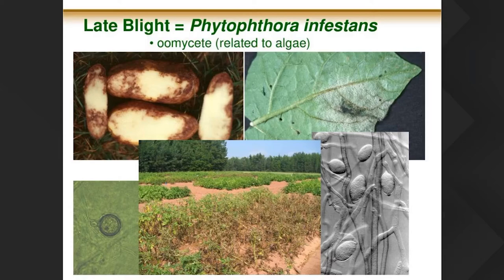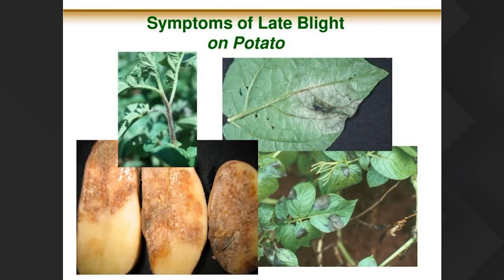Typical symptoms of late blight on potato include water-soaked or oily-looking leaf lesions. Flipping the leaf over under cool, humid conditions — like early morning dew — you'll see white fuzz on the undersurface where spores are being generated. You can also get stem lesions, and when spores wash down into the soil and percolate through cracks, they infect tubers. Infected tubers typically show a rusty, red, granular appearance. Bacteria can also invade causing wet rot, but late blight alone produces a dry, granular rot.